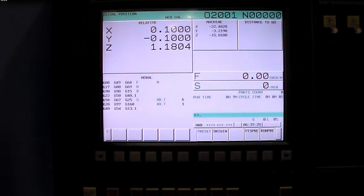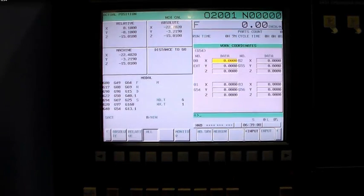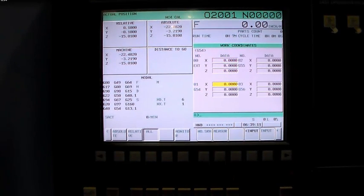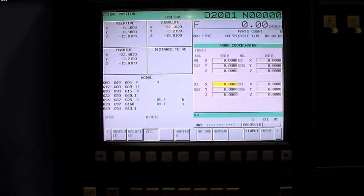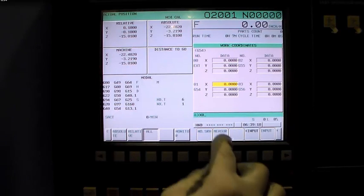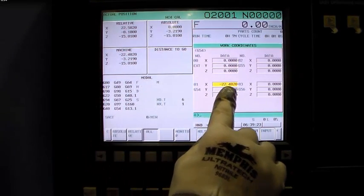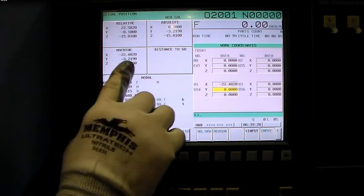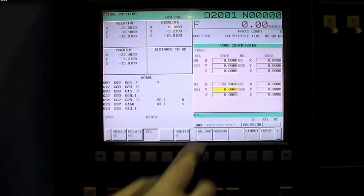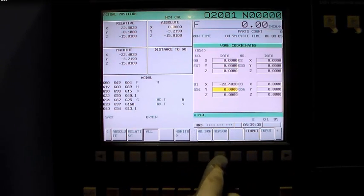From here we select the offset page and then select work offset. Bring the cursor down to the X-axis of G54, and then we're going to store that machine position in that field. Select X zero and click measure. Notice it took that machine position and stored it in X G54. We're going to do the exact same thing for the Y. Key in Y zero and select measure, and again you transfer that Y location into the G54.